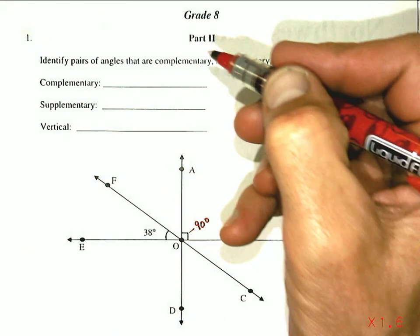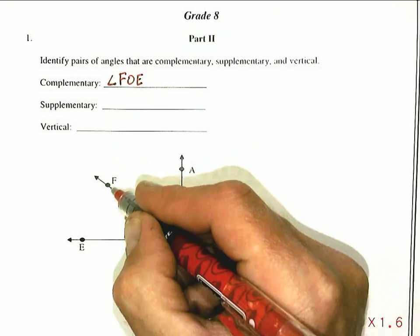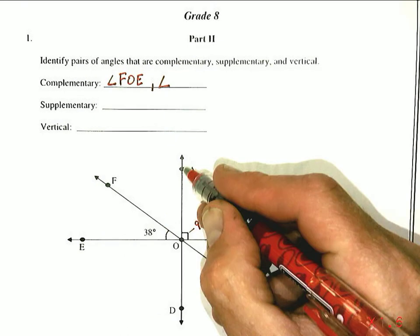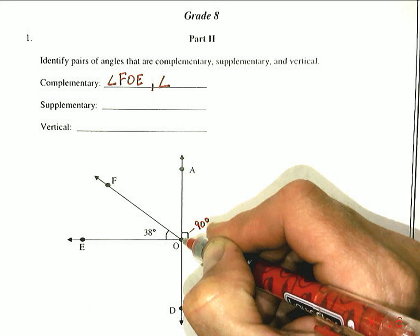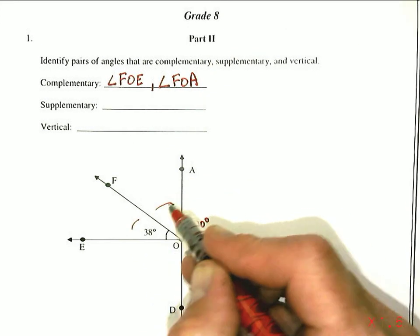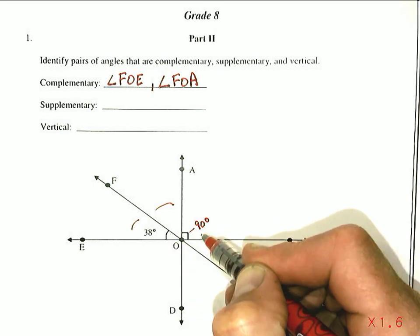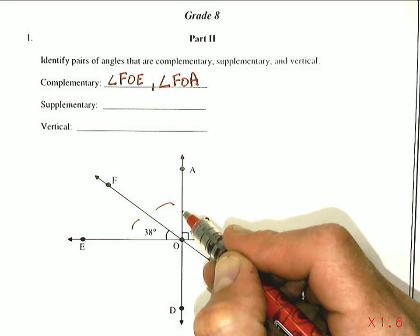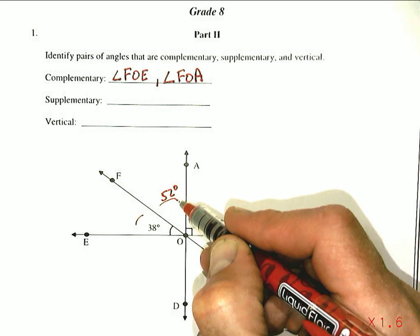We could put those two together. The way you would write that is with the angle symbol: angle FOE and the one it's complementary to is angle FOA. You can put them either way as long as the vertex — the middle point of the angle — is also the middle letter. Those two angles are complementary because together they add up to 90 degrees. Since this one is 38 degrees and together they make 90, the other angle would have to be 52 degrees.